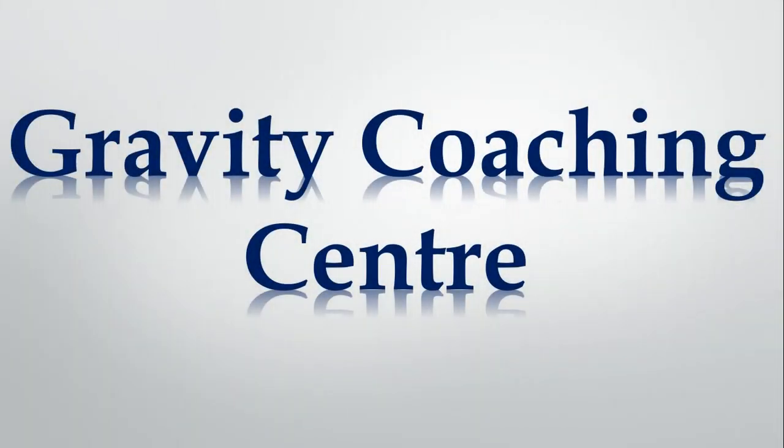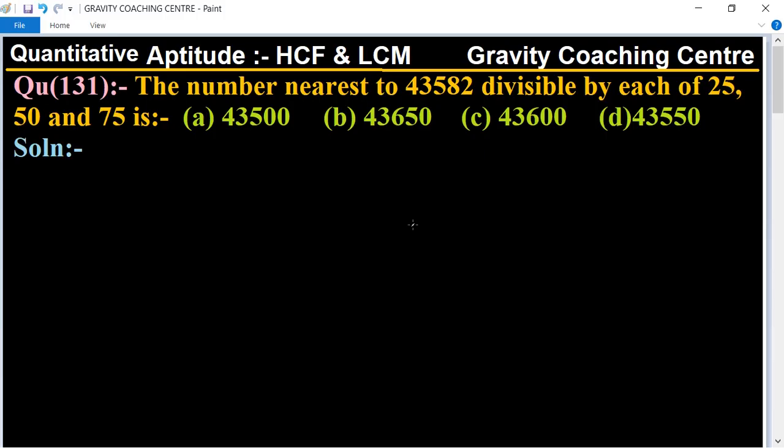Welcome to our channel Gravity Coaching Center. Quantitative Aptitude chapter: HCF and LCM. Question number 131: The number nearest to 43582 divisible by each of 25, 50, and 75 is?